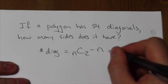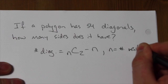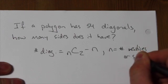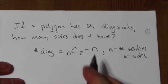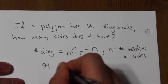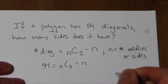Okay. So n is either the number of vertices or sides, and that's what we're going to be looking for here. Now, in this case, the number of diagonals is 54. That's n choose 2 minus n.